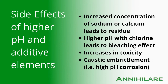Common side effects of higher pH and additive elements are: increased concentration of sodium or calcium leads to residue; high pH with chlorine leads to bleaching, increased toxicity, and a phenomenon known as caustic embrittlement, which is a type of corrosion caused by high pH. So why do chemical companies add these things? There are various reasons, mostly regarding stability of solution for storage, concentration capabilities for shipping, and other supply chain reasons — it has nothing to do with the effectiveness of the actual free chlorine.